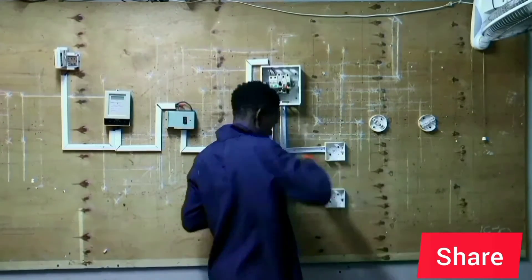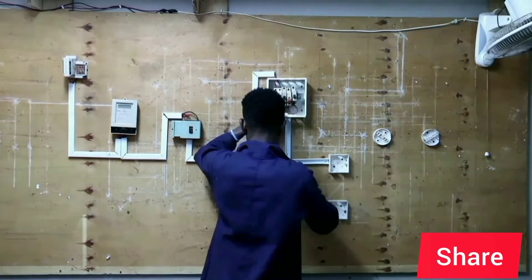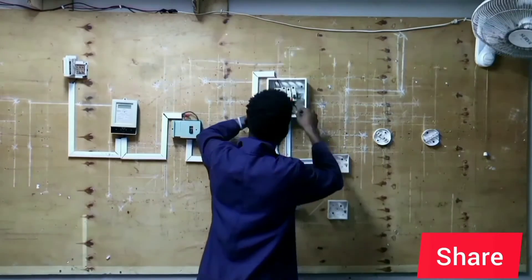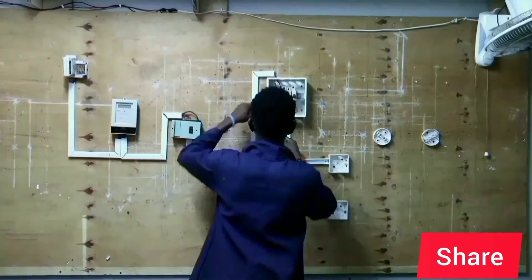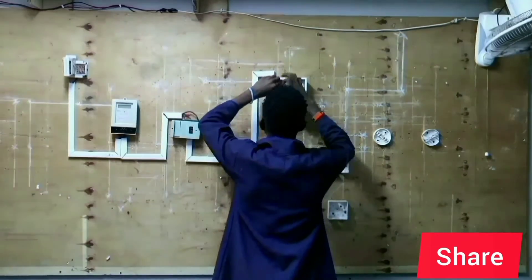Now, we are connecting our cooker control unit using a cable of 4.0 mm to connect to the 32 amp rating MCB using red for live, black for neutral, and yellow for earth.